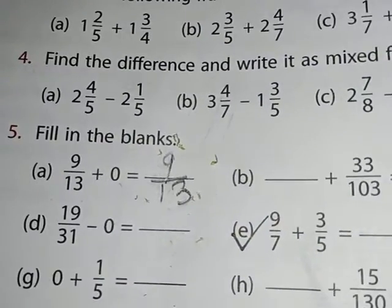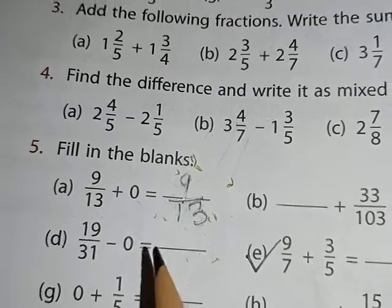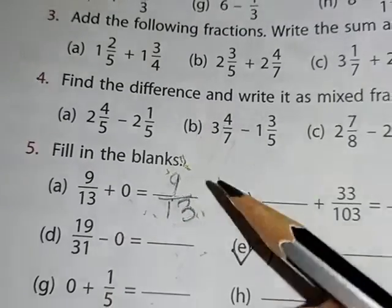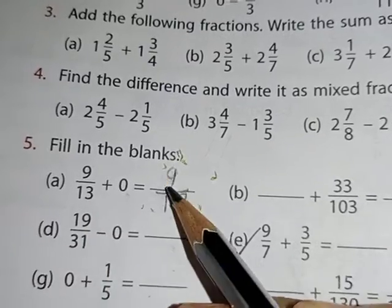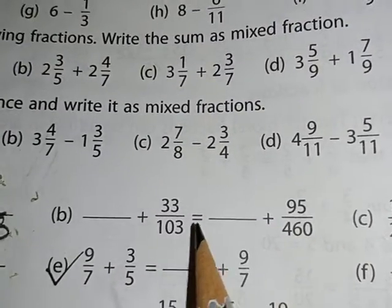When we add 0, we get that same fraction as our answer because 0 means nothing. We add nothing to the given number, so our answer will be that same number. Then b, here it is, before equal to 33 upon 103.